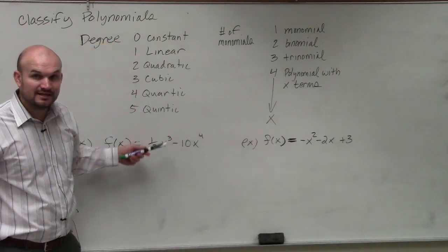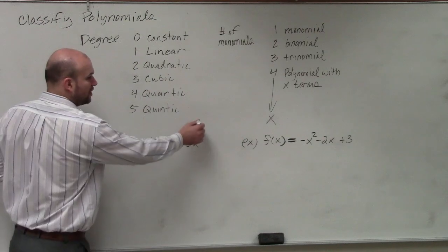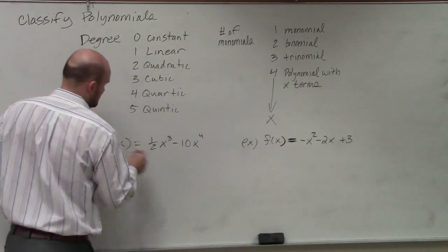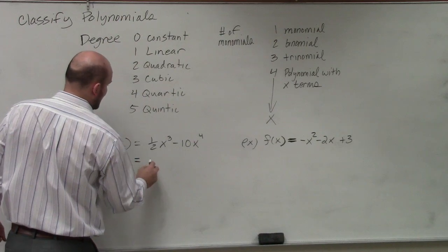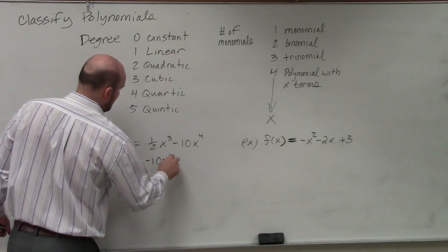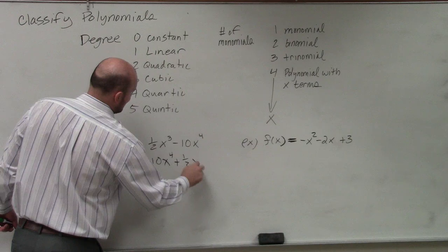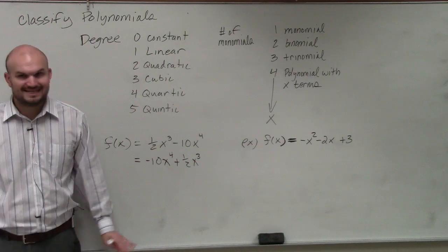This is not in standard form. 4 is my highest power. It's not listed first. So therefore, I have negative 10x to the fourth plus one-half x cubed. Does everybody see what I did?